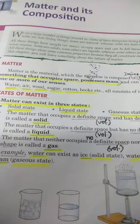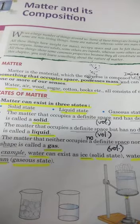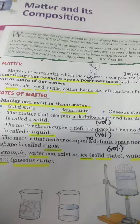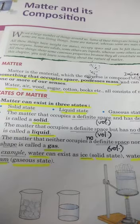What is a solid? It is that state of matter that occupies a definite volume and has a definite shape. What is liquid? It is that state of matter that occupies a definite volume but has no definite shape. What is a gas? It is that state of matter which neither occupies a definite volume nor has a definite shape.